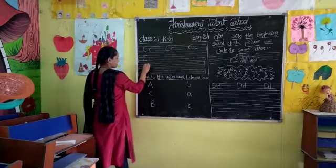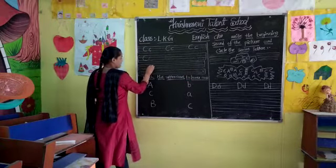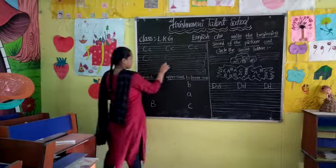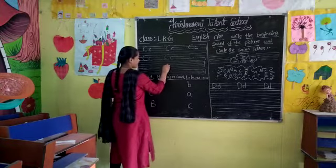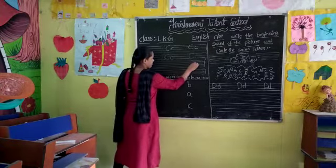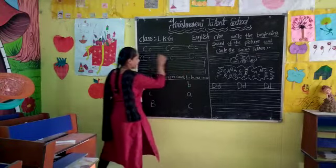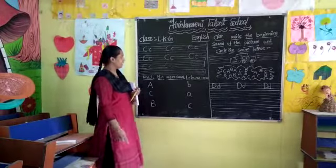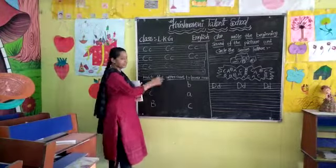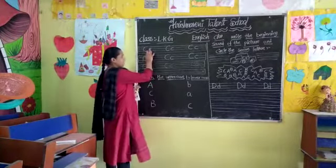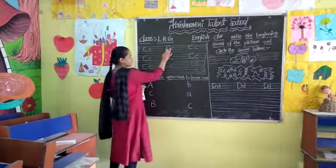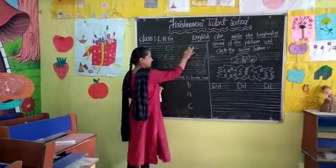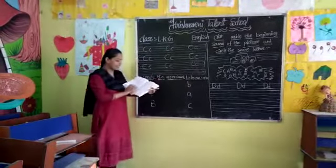You have to touch the capital C — three lines. Small c, you have to touch the middle two lines. See capital C, small c. Very good children. C for cat, candle, carrot, car, cow. Write — so many words will come. This is the capital C and small c. Capital C, small c, capital C, small c. Very good children.